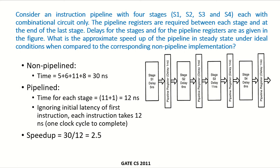Consider an instruction pipeline with 4 stages S1, S2, S3 and S4 each with a combinational circuit only. The pipeline registers are required between each stage and at the end of the last stage. Delays for the stages and for the pipeline registers are as given in the figure. What is the approximate speedup of the pipeline in steady state under ideal conditions when compared to the corresponding non-pipeline implementation?